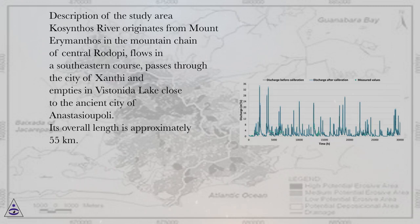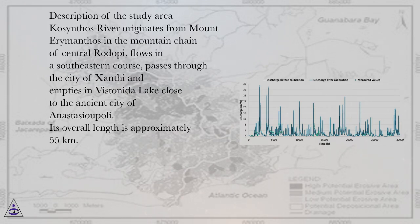Kosynthos River originates from Mount Rhymanthos in the mountain chain of central Rhadapi, flows in a southeastern course, passes through the city of Xanthi, and empties in Vistanita Lake close to the ancient city of Anastasupoli. Its overall length is approximately 55 kilometers.